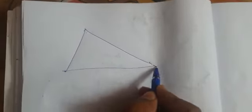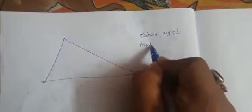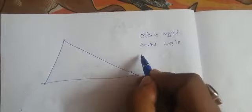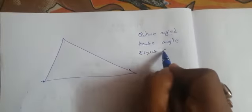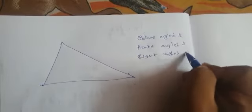A triangle can be of any type. I have previously taught you about the types of triangles: the obtuse angle triangle, the acute angle triangle, and the right angle triangle. All these things we have made clear.